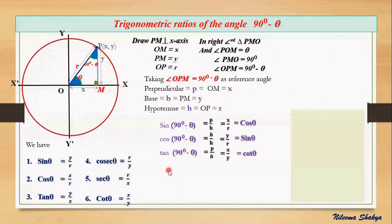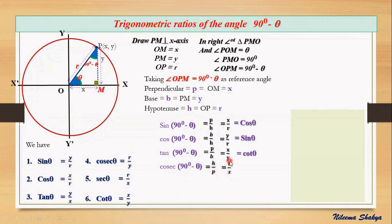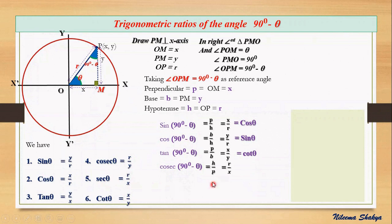Another ratio: cosec(90° − θ). It is hypotenuse by perpendicular. The hypotenuse is r and the perpendicular is x, so h/p = r/x. Looking at ratio number 5 from our list, sec θ = r/x, so this r/x can be replaced by sec theta. Therefore cosec(90° − θ) = sec θ.